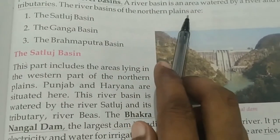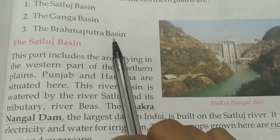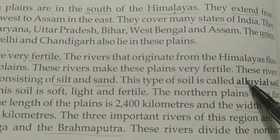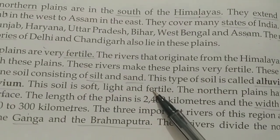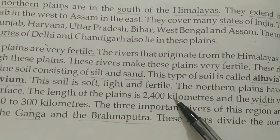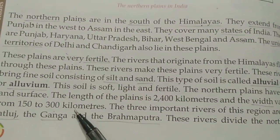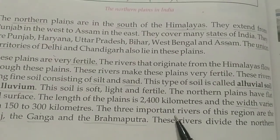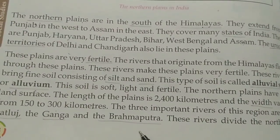The river basins of the Northern Plains are the Satluj basin, Ganga basin and the Brahmaputra basin. The alluvial soil is very soft, light and fertile. The length is 2400 kilometers and the width is 150 to 300 kilometers. The main rivers in the Northern Plains are Satluj, Ganga and Brahmaputra.